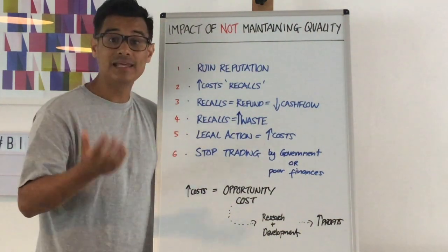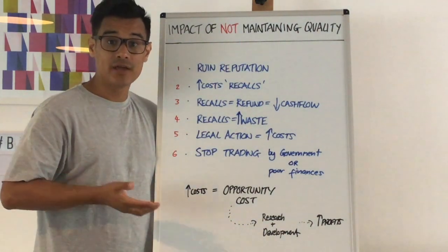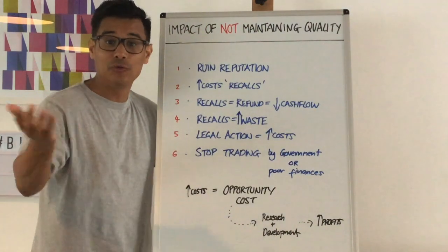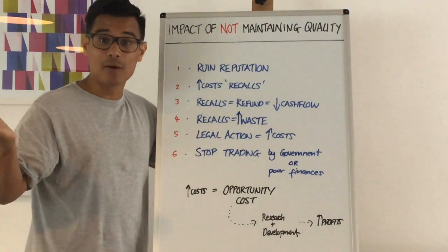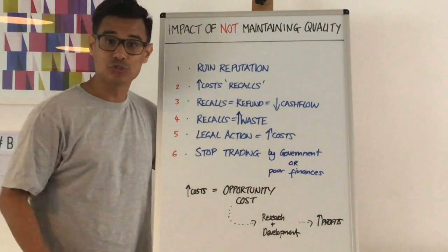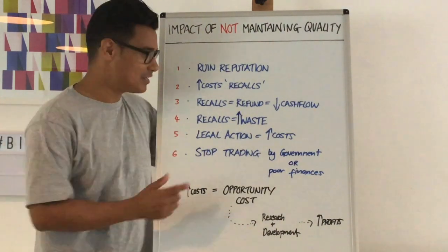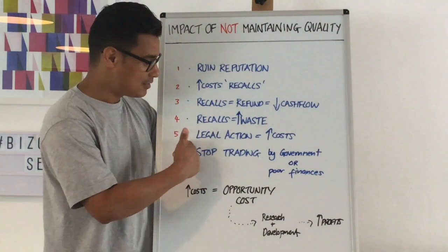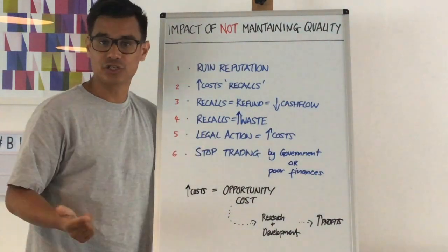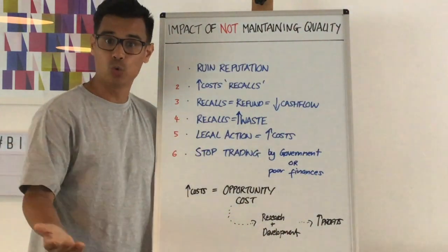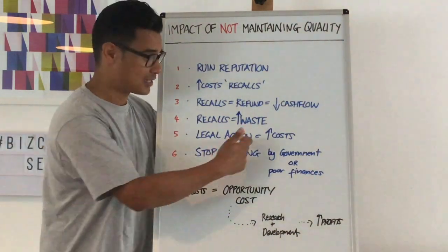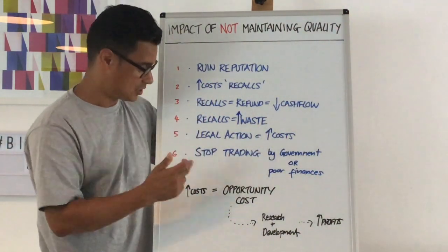Number five: legal action. So if for example you bought some electrical product and got electrocuted or hurt for whatever reason, it could lead to legal action. You might have to go to court, you might be sued — so that's more costs.